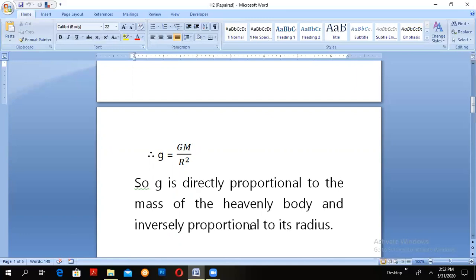Since the mass of the heavenly body is constant everywhere but its radius changes from place to place, so the acceleration due to gravity on a planet may not be constant on every place.